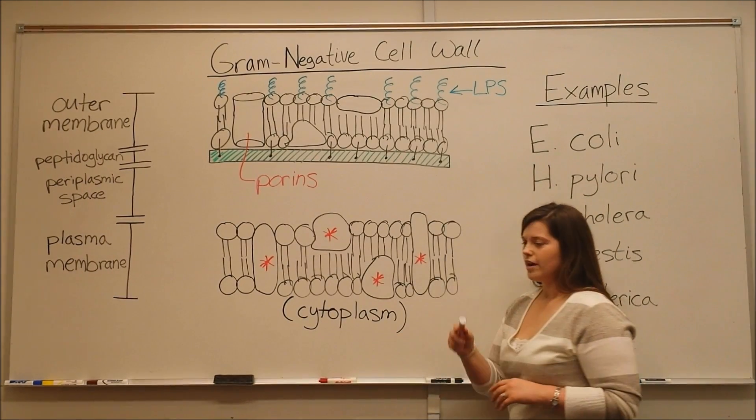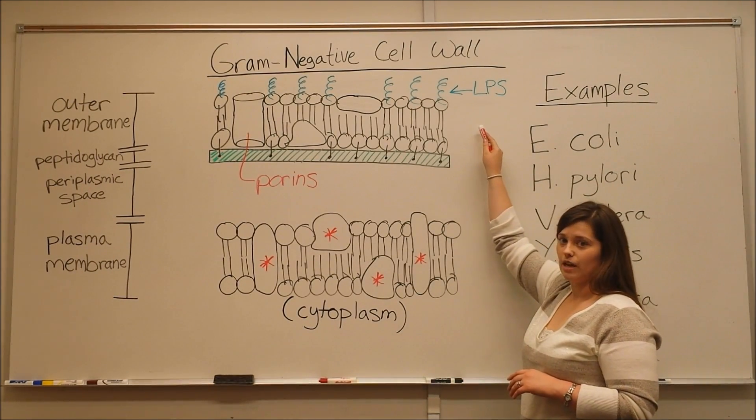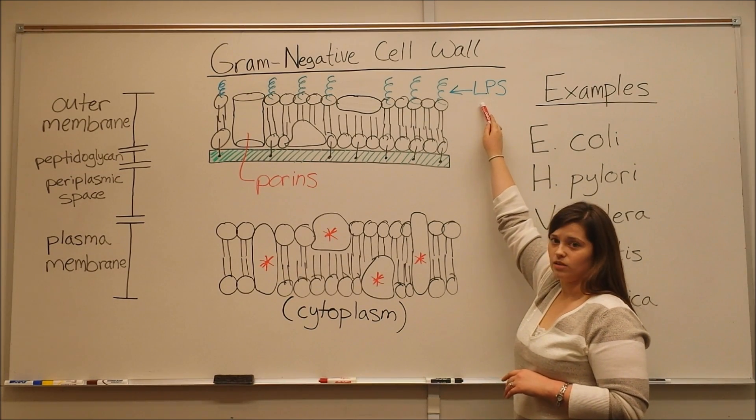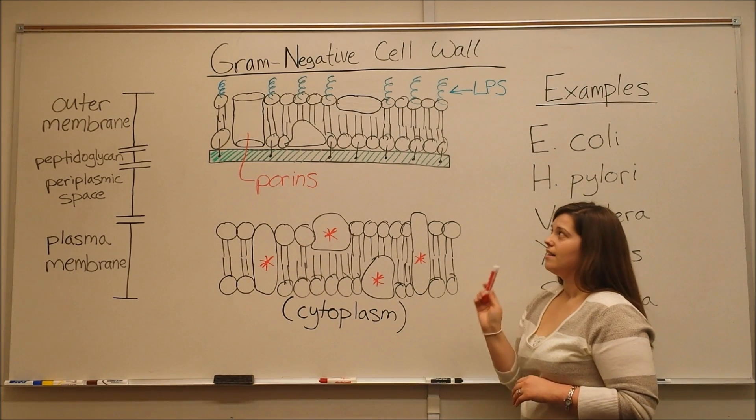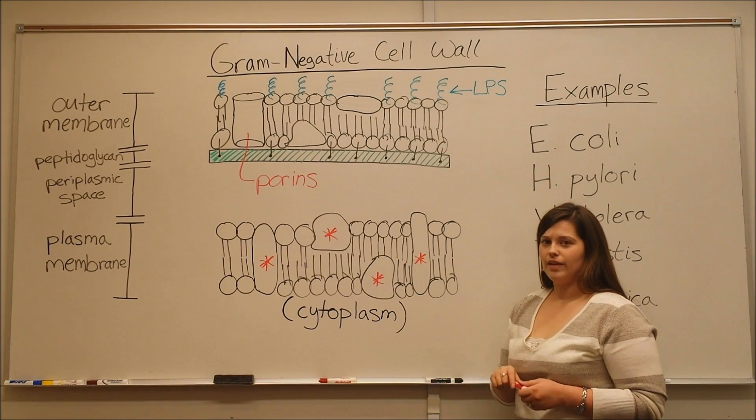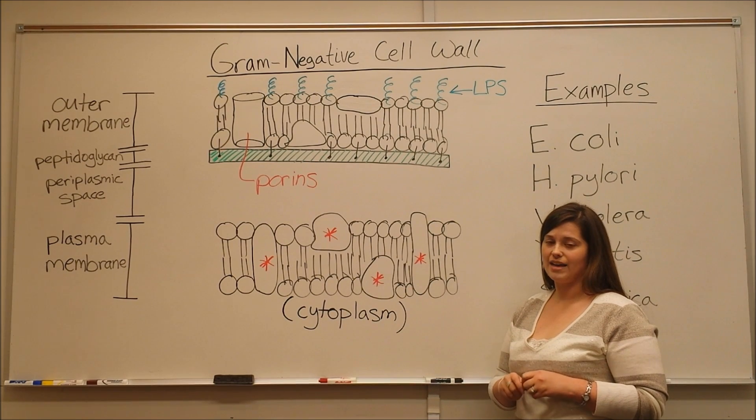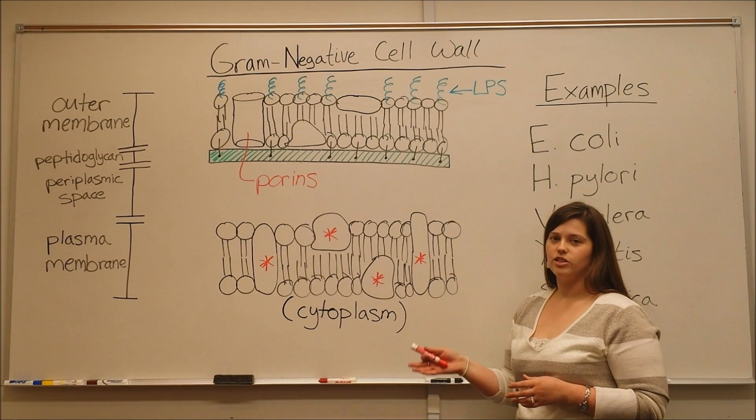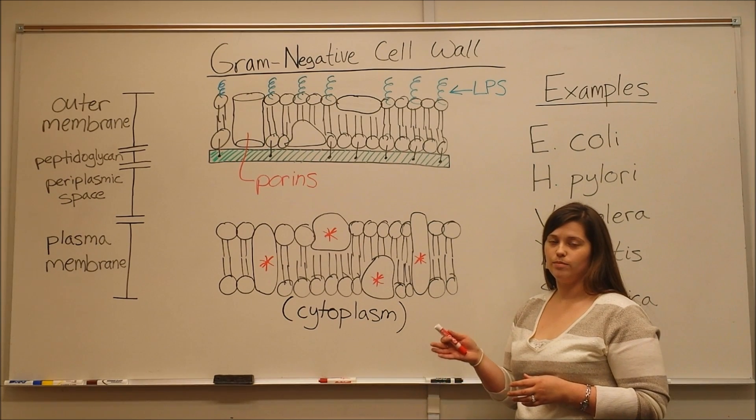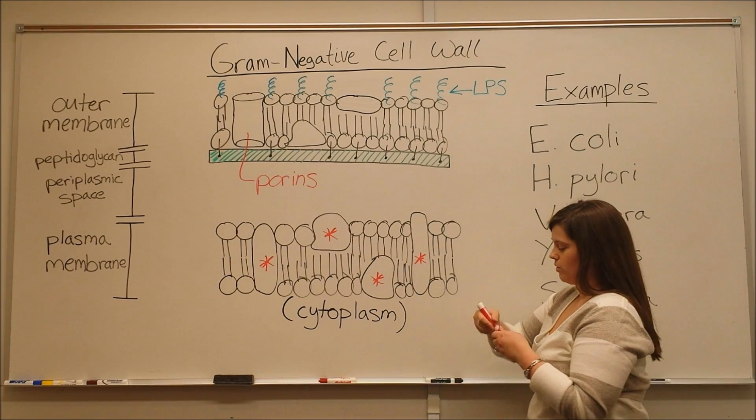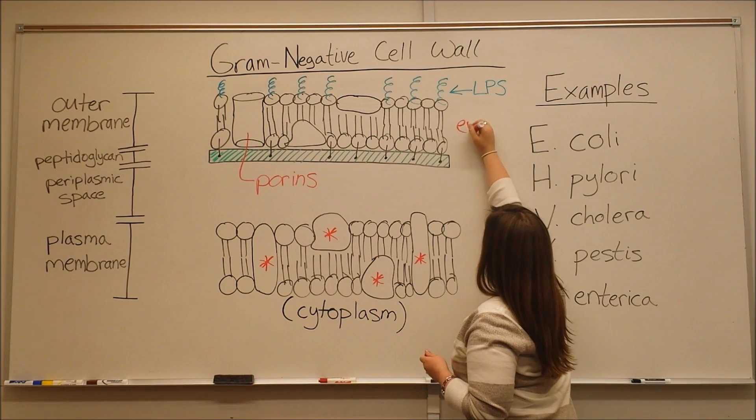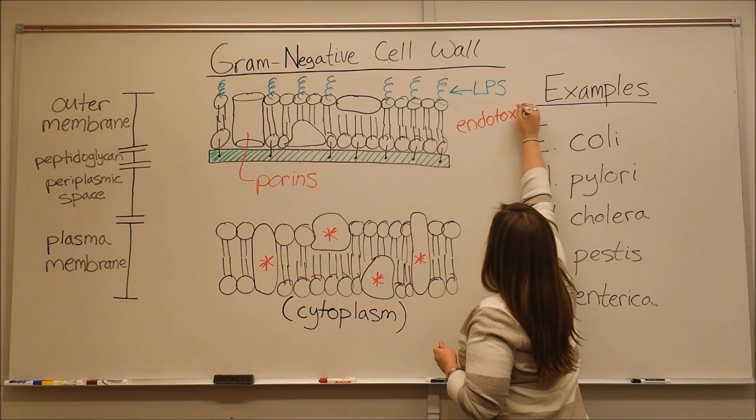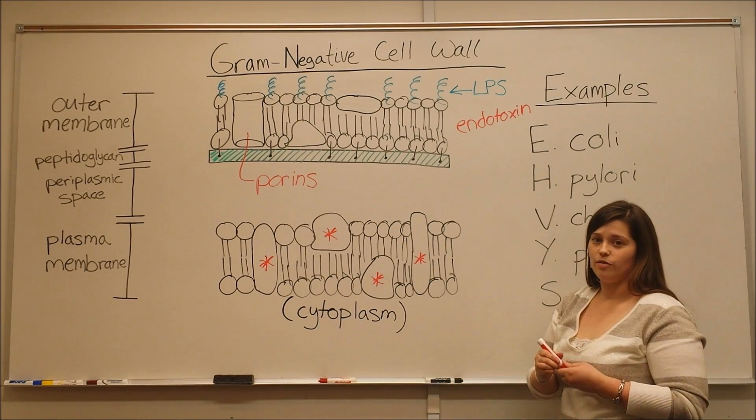Now another very important feature of gram negative cell walls is what's on the very outside of this outer membrane. LPS or lipopolysaccharides, this is a component that's only found on the outside of gram negative cell walls and that has very important consequences when you have infections of gram negative bacteria in the blood. This LPS, you'll also hear it referred to as endotoxin for exactly that reason.